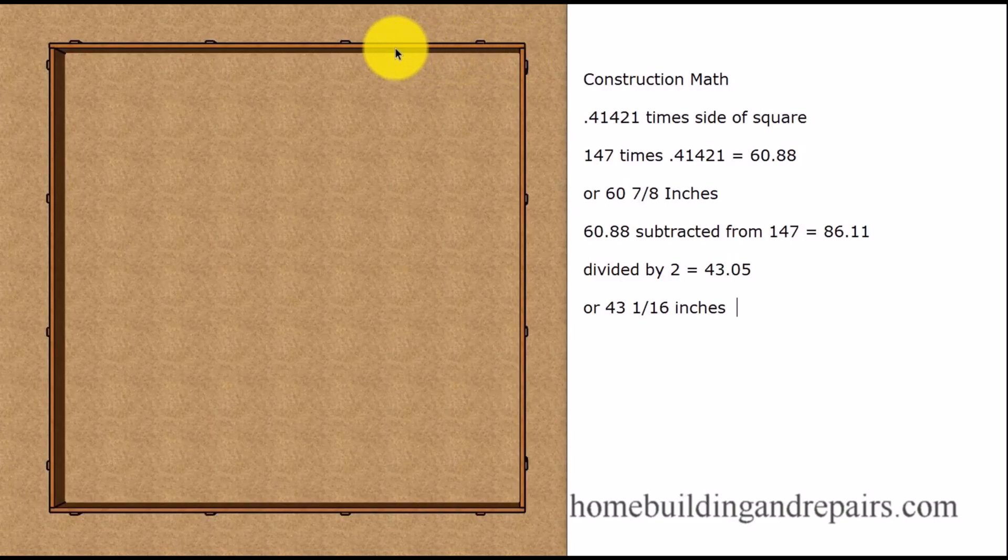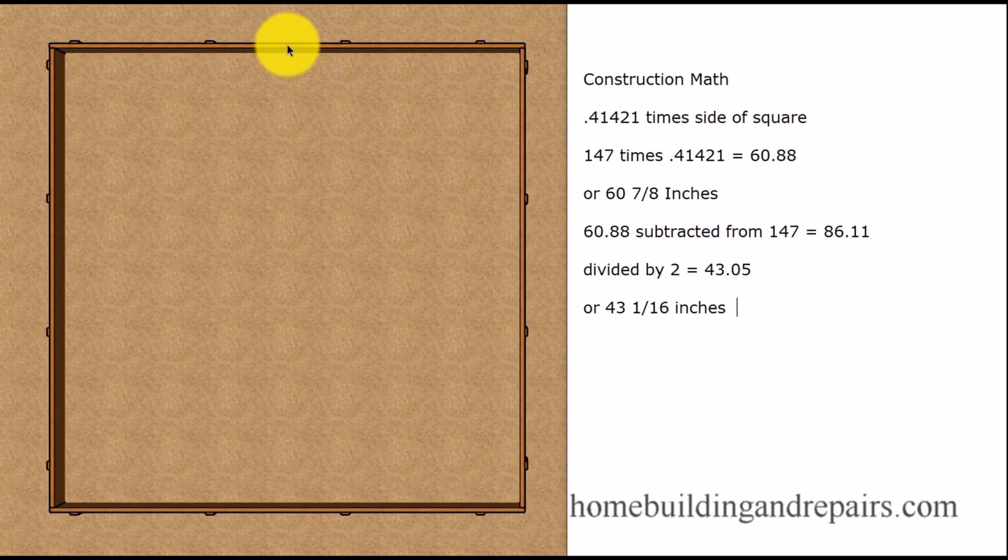Now we're going to take 60.88 and we're going to subtract it from the length and then divide that number by two. The reason for that is so that we can figure out where we can make a mark so that we can put our 60.88 in the right spot. But you could actually just go to the center if you wanted to, go to the center of the length and simply center this measurement in there, that would also work.